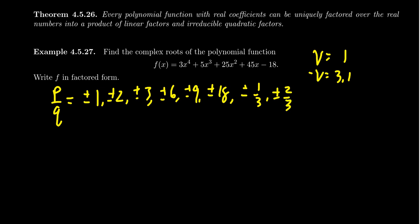That's a pretty big list. And since the leading coefficient is 3, we should anticipate there may be some non-integer root — it could be a fraction, but it also could be irrational or imaginary. We don't know, so we're going to have to search for them.